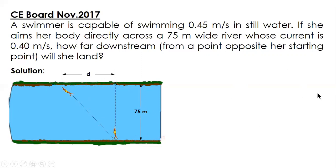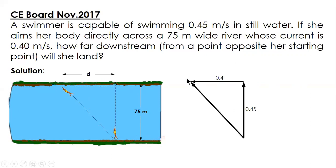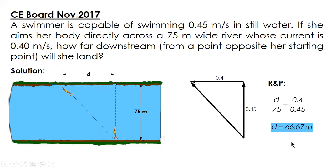To solve for D, we will use ratio and proportion. Plot the velocities: the swimmer's velocity is 0.45 meters per second and the current is 0.4 meters per second. The ratio is: D over 75 equals 0.4 over 0.45. Solving this, D equals 66.67 meters.